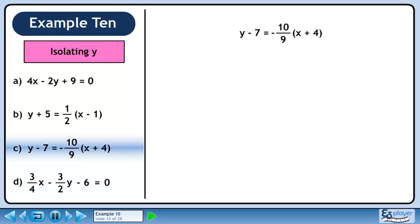Now we'll isolate y in part c. There is only one denominator, 9. Multiply both sides of the equation by 9. The 9's will cancel out. Rewrite this so it looks a little cleaner.